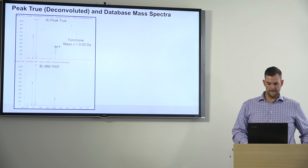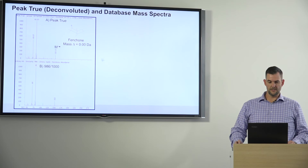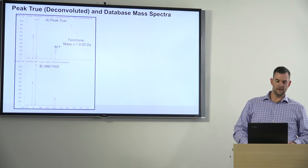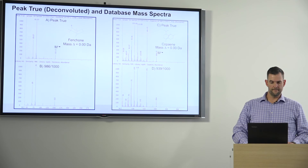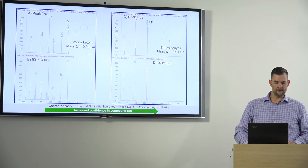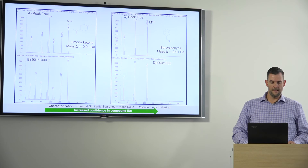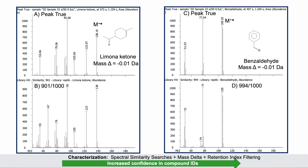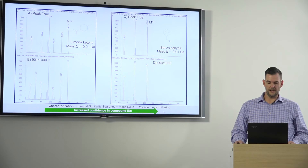Just to take a look at the quality of the mass spectra obtained using this instrumentation: fenchone had a mass delta value right on theoretical, resulting in a similarity score of 986 out of 1000 against the library. Copaene showed very good mass delta values and an excellent similarity score of 939 out of 1000. For non-terpenoids, limonene ketone and benzaldehyde also had very good spectral similarity scores and great mass delta values. When you add similarity searches, mass delta, and retention index filtering together, it significantly increases confidence in compound identification.